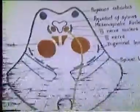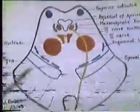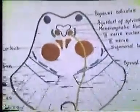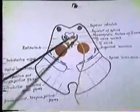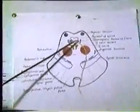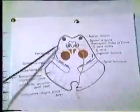Good day ladies and gentlemen. Today's topic is the oculomotor nerve, that is the third cranial nerve. We begin the description of the oculomotor nerve with its nucleus. The nucleus lies in the midbrain.